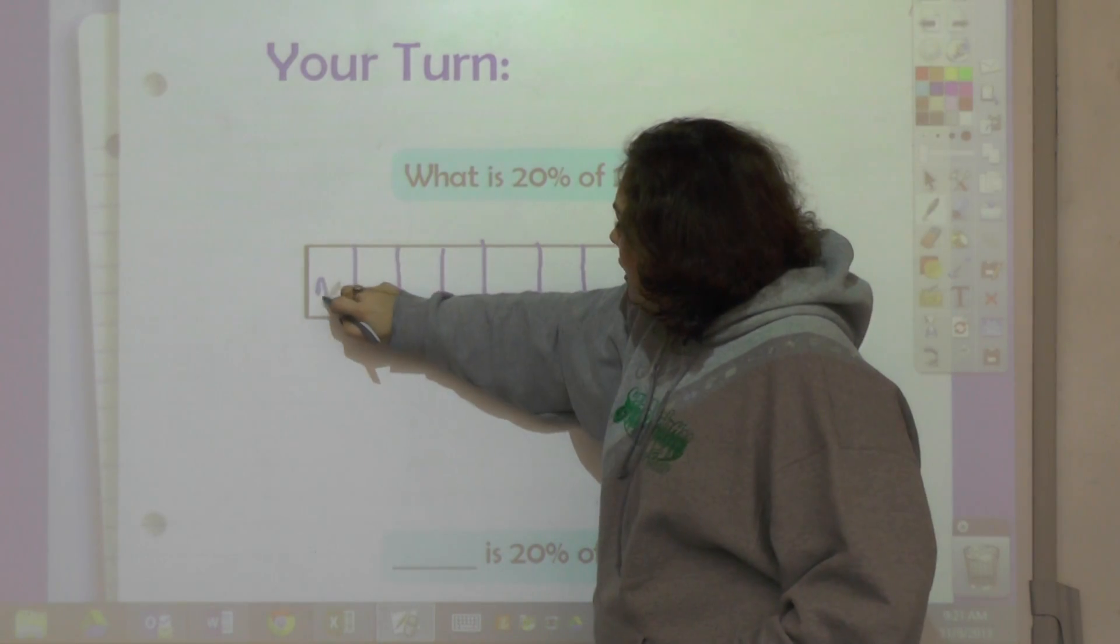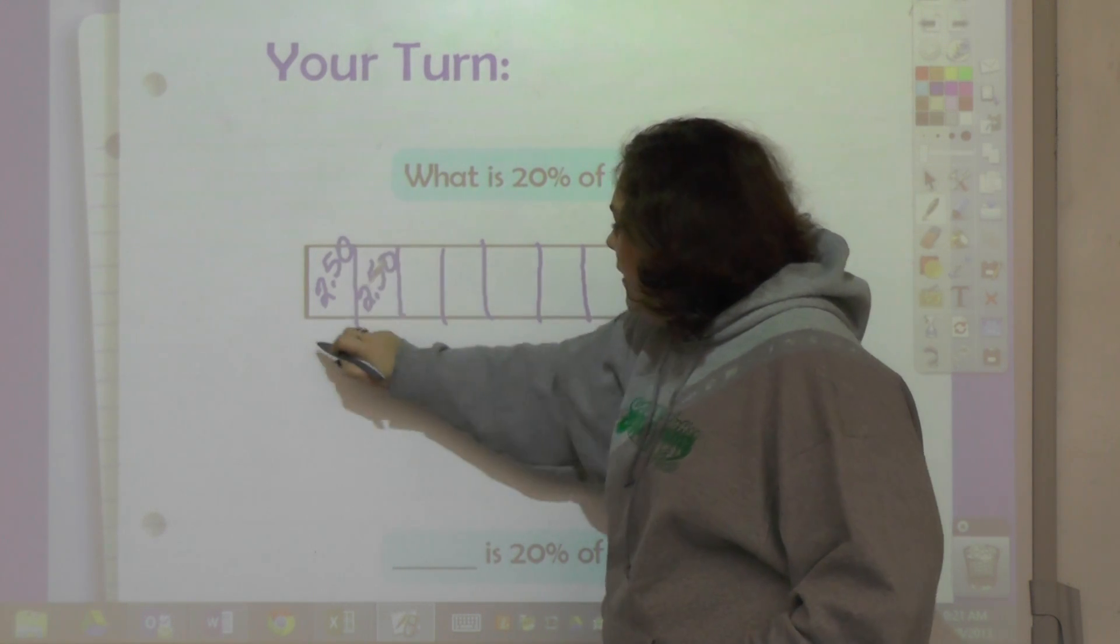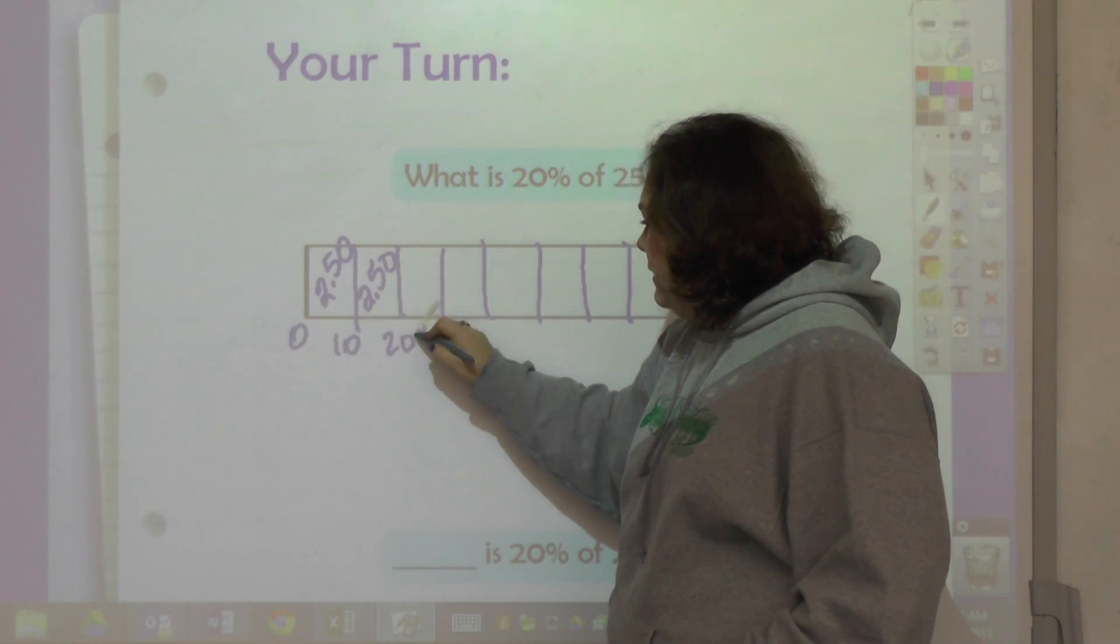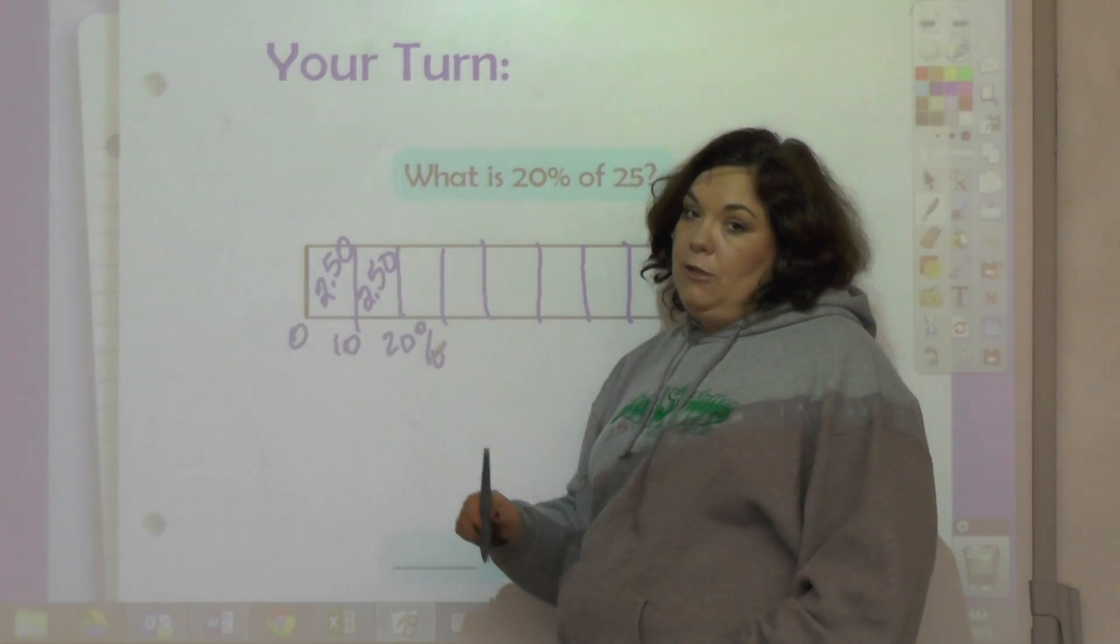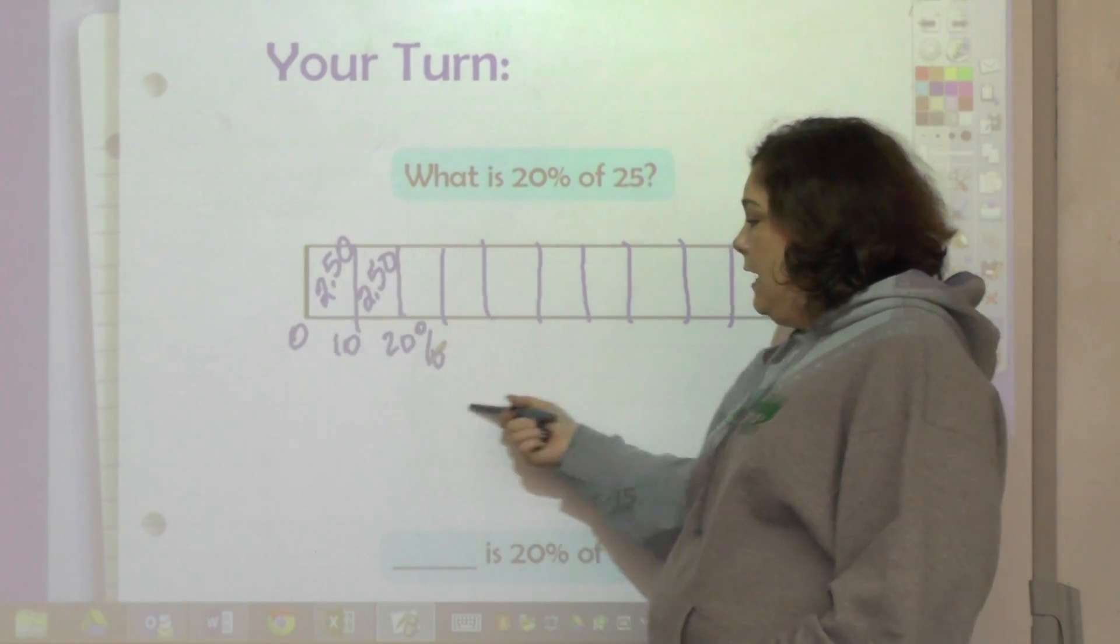Now, if you did it into tenths, that would be okay. I'm not going to write this all out, but it would be 2.5, 2.5, and that would be zero percent, 10%, 20%, and that would add up to five. So it's the same thing - 20%.